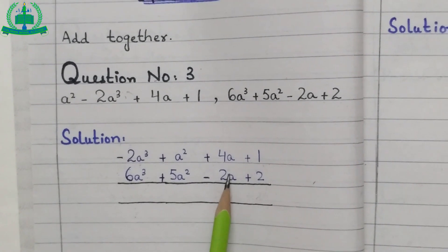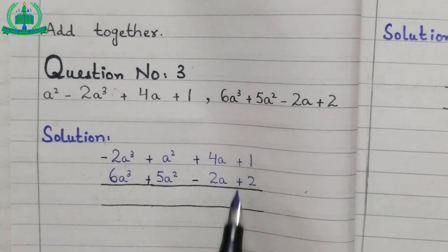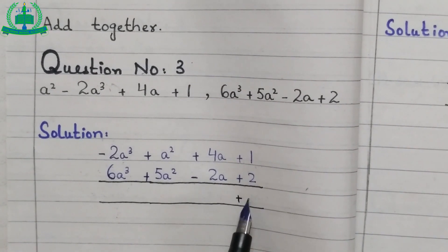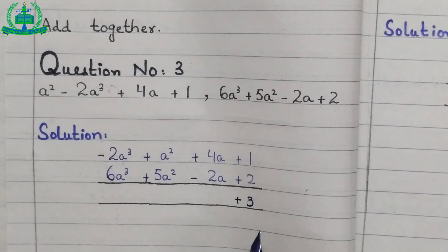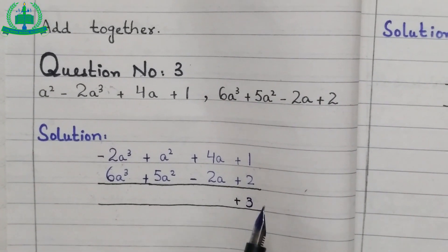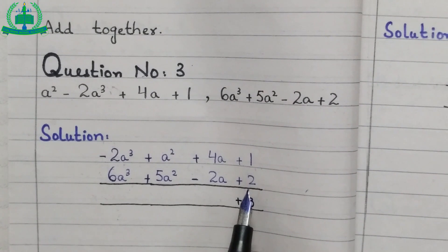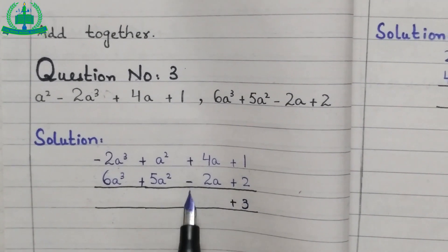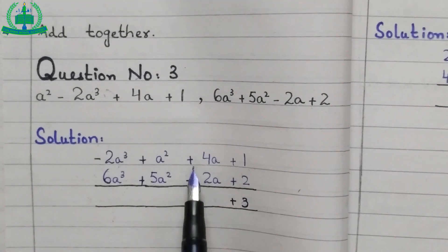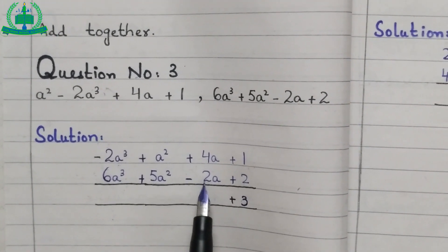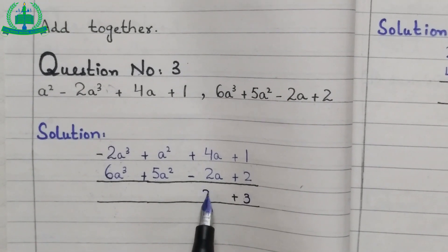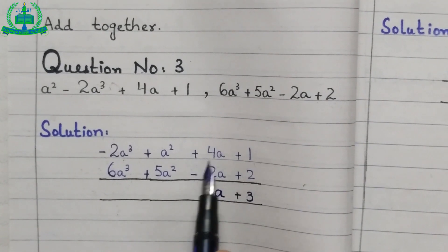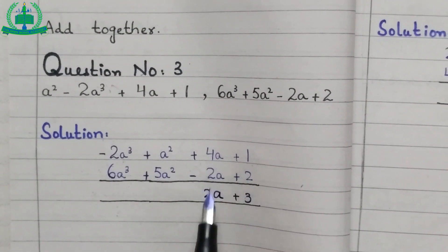Now we add the constant terms: 1 plus 2 equals 3. We take the sign of the larger digit — the larger digit is 2 and it has a plus sign, so we write plus 3. For the 'a' terms: 4a minus 2a equals 2a. The larger digit is 4 and it has a plus sign, so we write plus 2a.